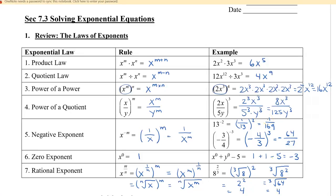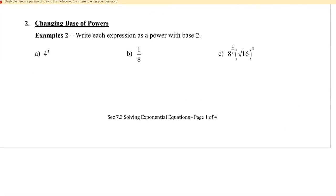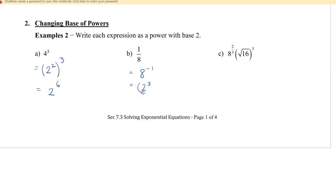Let's apply these rules to change the base of powers, which will be useful when solving exponential equations. First, 4 to the power of 3 can be rewritten as 2 squared in brackets to the power of 3, giving 2 to the power of 6. Second, 1 over 8 can be rewritten as 8 to the negative 1, then as 2 cubed to the negative 1, giving 2 to the negative 3.